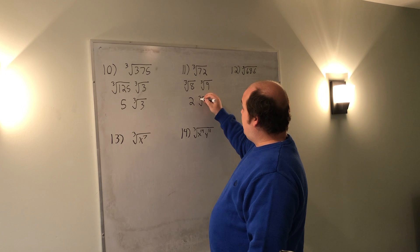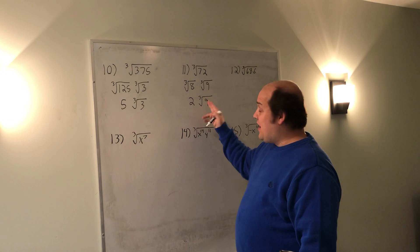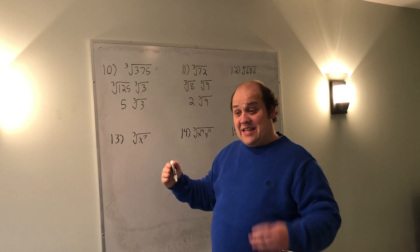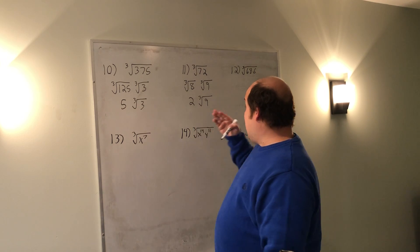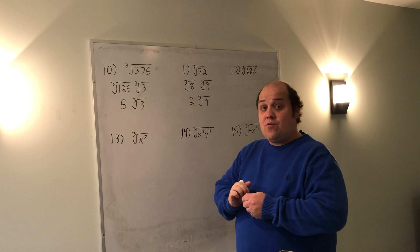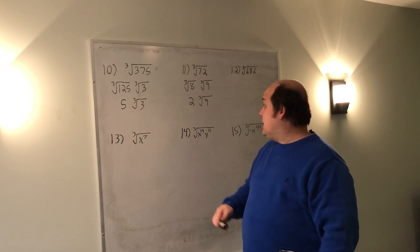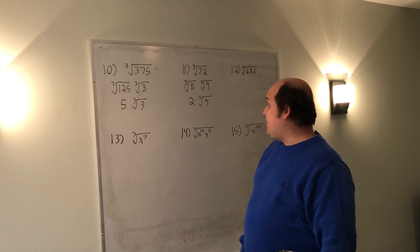Some students have issues when they see this cube root of 9. It's triggering to them because they think I know that 9 as a square root comes out as 3, and they want it to work the same under a different numbered root. The reason 9 can come out of a square root is because 3 times 3 is 9. Under a cube root, there is nothing times itself 3 times that would give me 9.